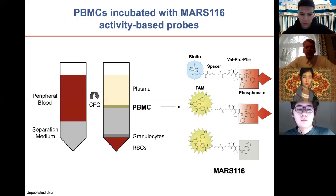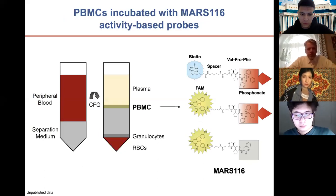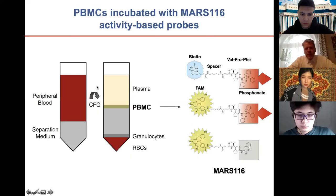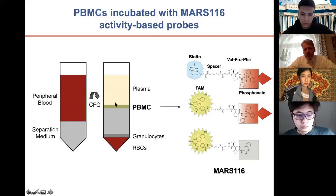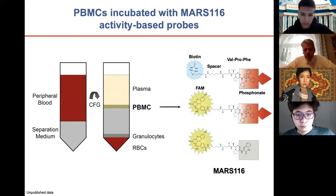The other approach uses PBMCs — peripheral blood mononuclear cells. From blood donation, you separate using a separation medium by centrifugation for roughly 20 minutes, then collect the intermediate phase or interface, which contains the immune cells.